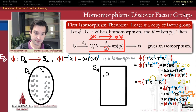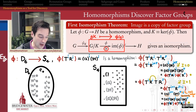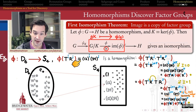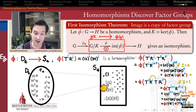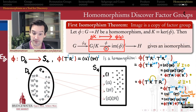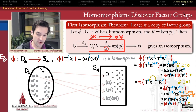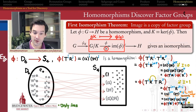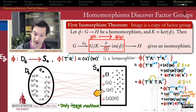Now let's figure out what the first isomorphism theorem actually does for us. Looking at all 12 elements of D6 and all 24 elements of S4, the first thing we notice is that there are really only a few elements that matter inside S4. The identity of D6 maps to the identity of S4, t maps to (1 2), r maps to (3 4), and tr maps to (1 2)∘(3 4). None of the other 20 elements of S4 are hit. So the image of this homomorphism consists only of those four elements — those are the only ones that matter.